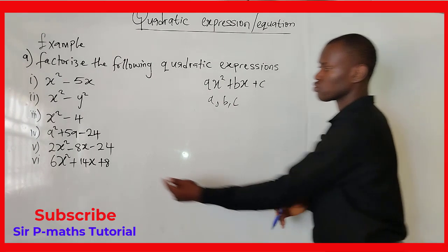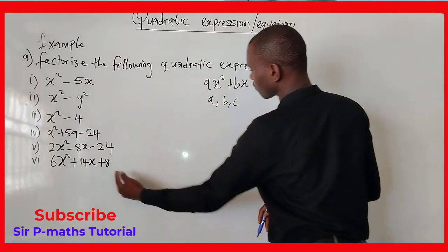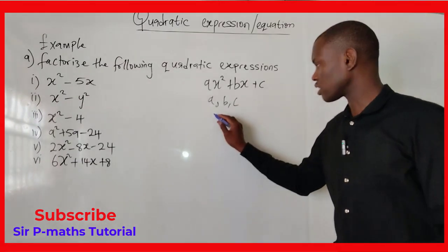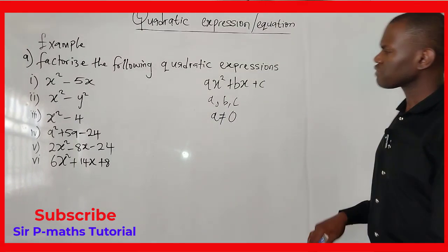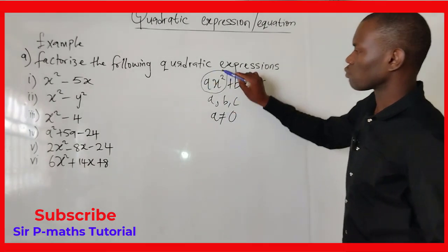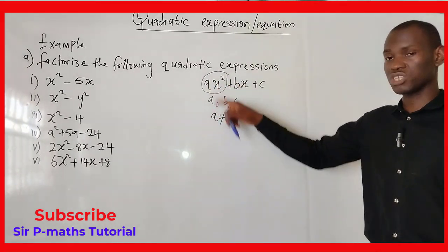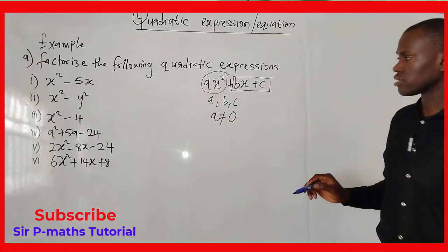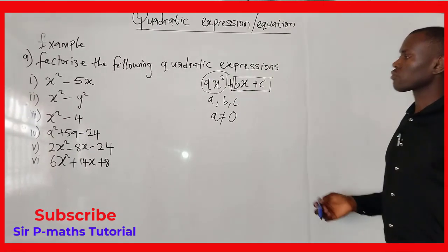We have 6 to stand for a, and then we have 14, and we have 8 — these are all constants. But in a quadratic equation, a must never be zero. If a is zero, then this entire term will be cancelled out because zero multiplied by x² gives zero. We will now have only two terms remaining, which makes it a linear equation or expression.